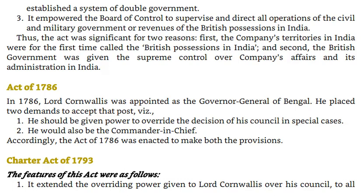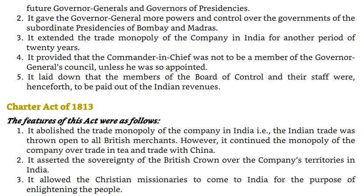Charter Act of 1793. Its features were: 1. It extended the overriding power given to Lord Cornwallis over his council to all future Governor-Generals and Governors of Presidencies. 2. It gave the Governor-General more powers and control over the governments of the subordinate presidencies of Bombay and Madras. 3. It extended the trade monopoly of the Company in India for another 20 years. 4. It provided that the Commander-in-Chief was not to be a member of the Governor-General's council unless specifically appointed. 5. It laid down that members of the Board of Control and their staff were henceforth to be paid out of Indian revenues.